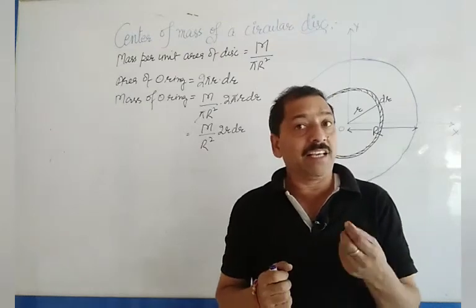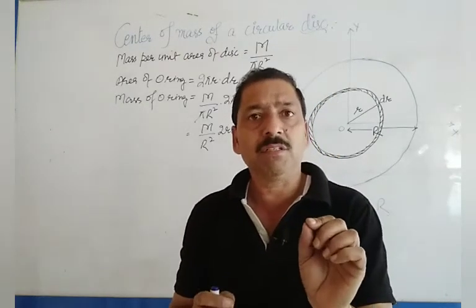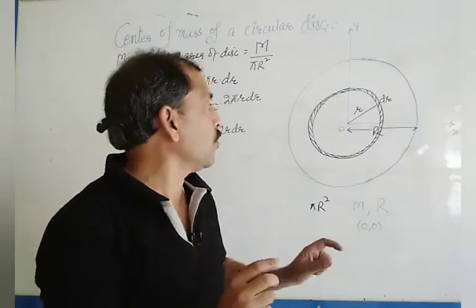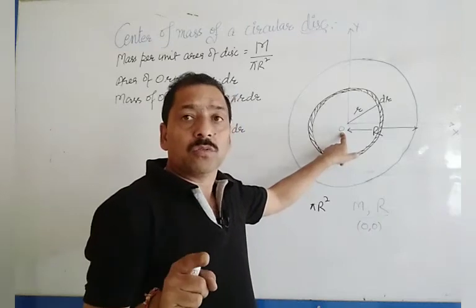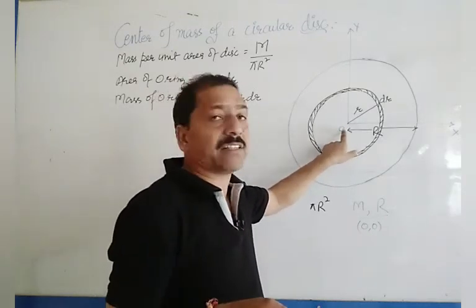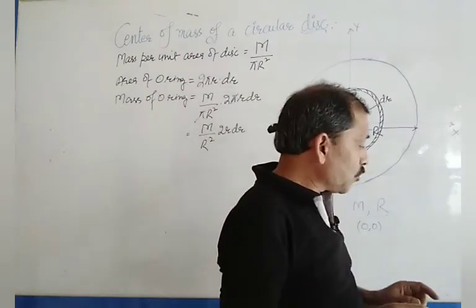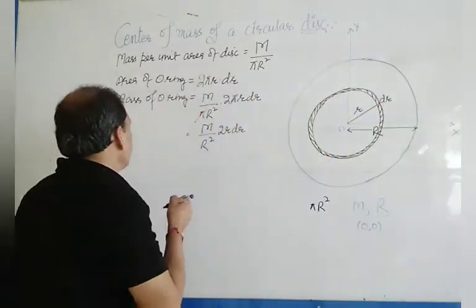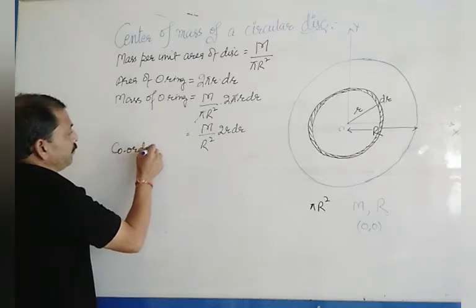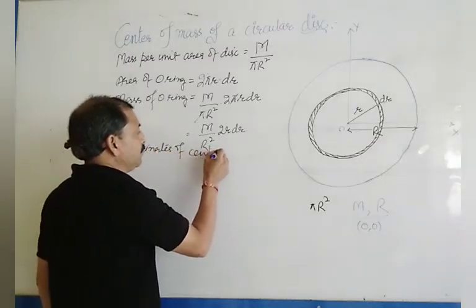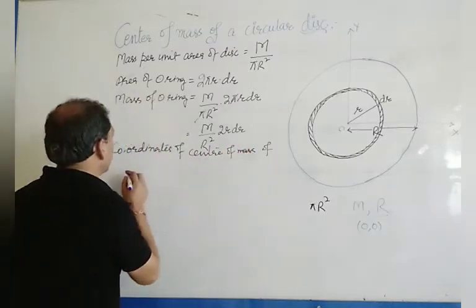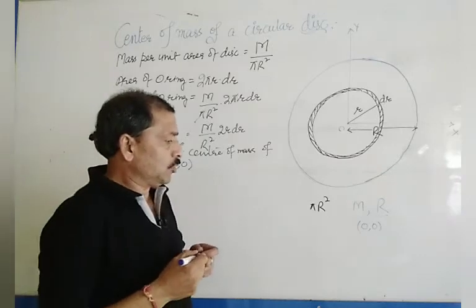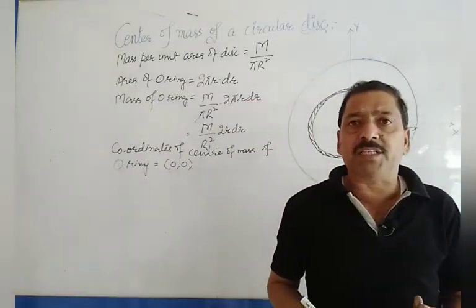We have learned in the last class that if there is a circular ring whose geometric center is at the origin, then the center of mass of that ring lies at (0, 0). So the coordinates of the center of mass of each circular ring are (0, 0).